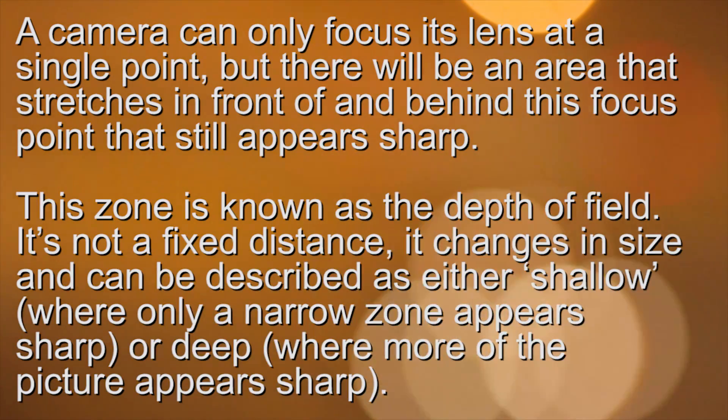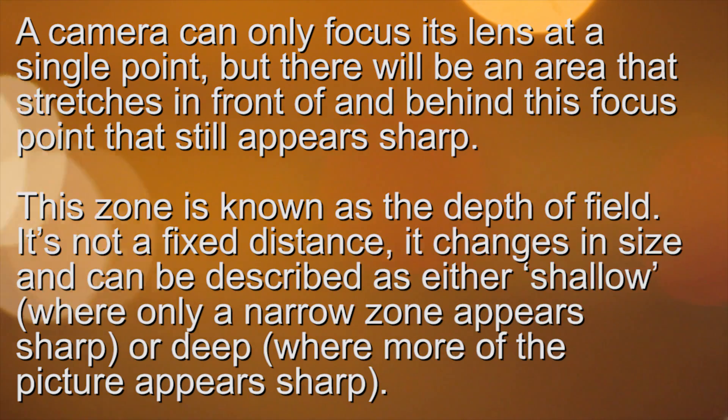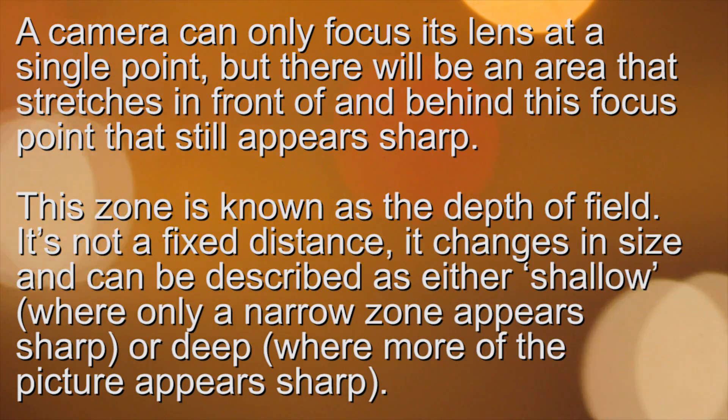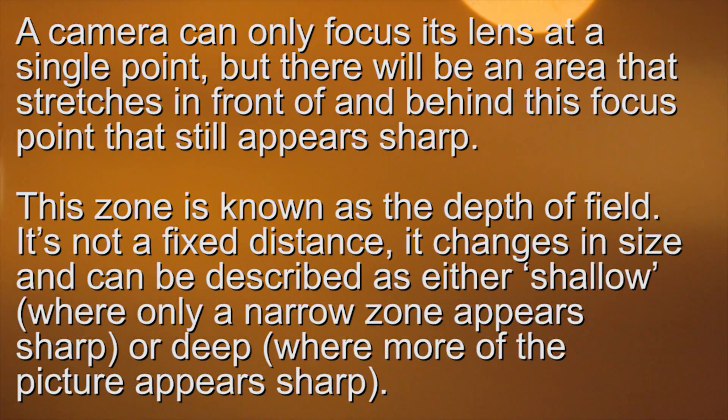Now you may be wondering just what the heck depth of field is. DigitalCameraWorld.com describes it as this: a camera can only focus its lens to a single point, but there will be an area that stretches in front of and behind this focus point that appears sharp. This zone, this area, is what is known as depth of field.